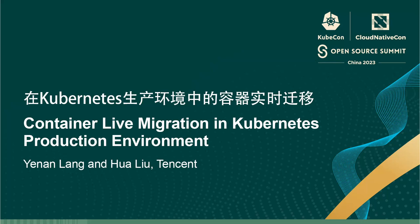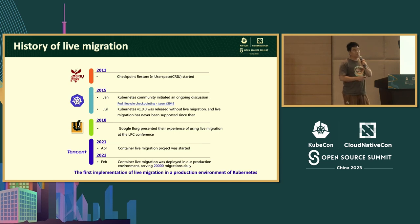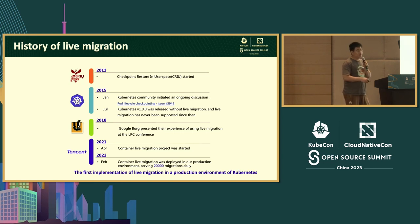Let's take a look at the history of live migration (热迁移). This is not a new topic. Many years ago the industry has been trying to do live migration. In 2011, CRIU started this project. Its function is to checkpoint a process to a file, and restore the complete process from that file. This is the main tool we use for checkpoint and restore.